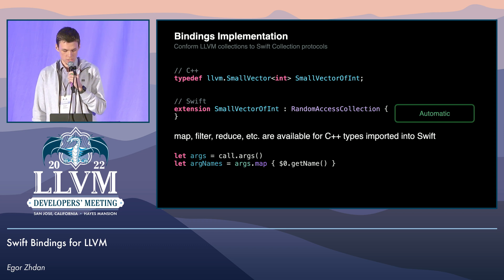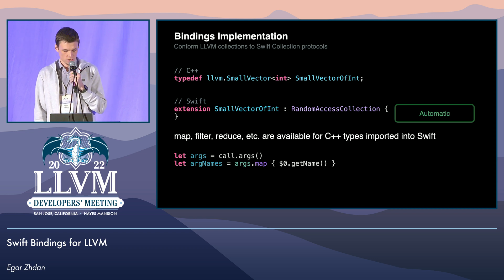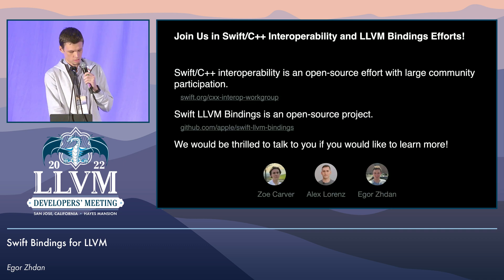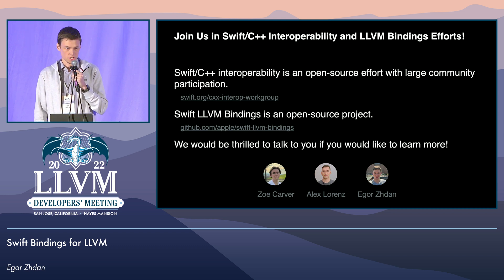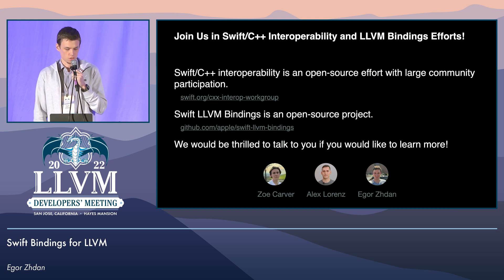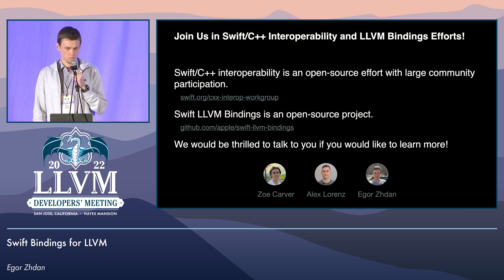Conformance to collection protocols is just one of the aspects of Swift and C++ interoperability, which provides a lot of functionality to expose C++ APIs ergonomically to Swift. Swift and C++ interop is a feature under active development, and the Swift LLVM bindings project is in very early stages. We have significant community participation in the Swift and C++ interop effort, and we will be excited to see more folks contributing to it in the open source. The three people at Apple who mainly work on this are Zoe, Alex, and me. All three of us are at the conference today, and we will be thrilled to talk to you about it. Thanks for listening.